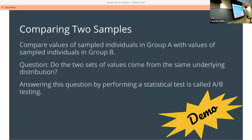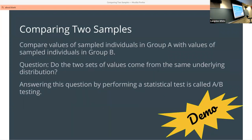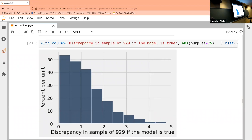A/B testing is very important and really comes in handy when developing websites, but the term is pervasive in many different fields. When we're taking two different sets of samples — sample individuals in group A and group B — do they come from the same underlying distribution? We answer that question by performing a statistical test, and that's called A/B testing.